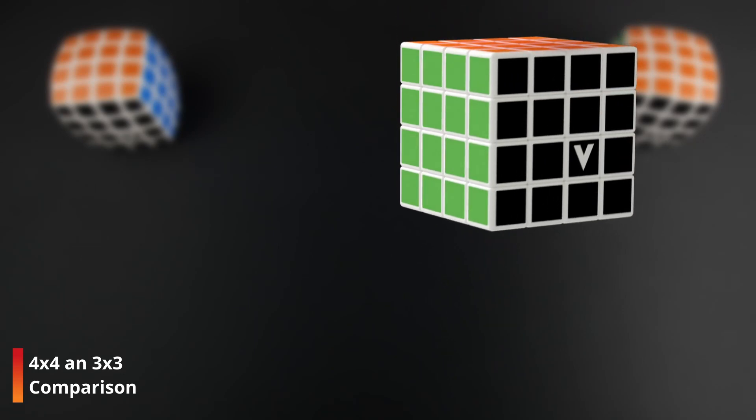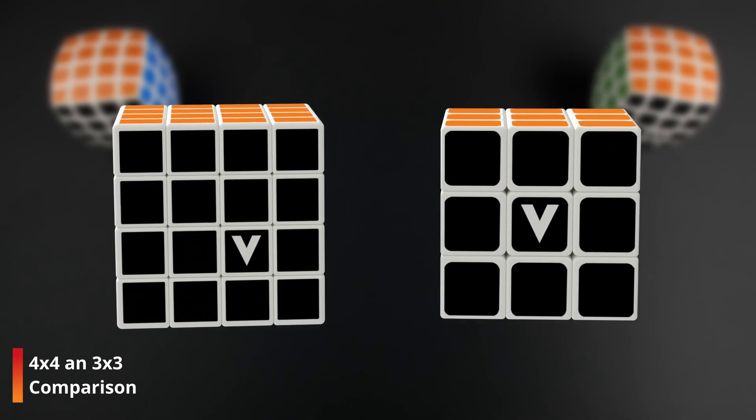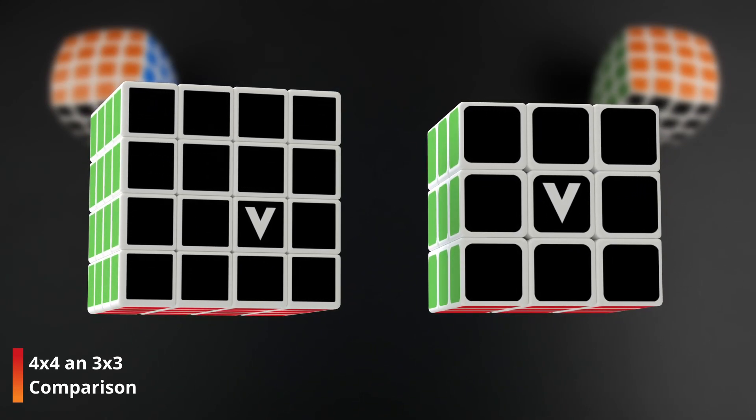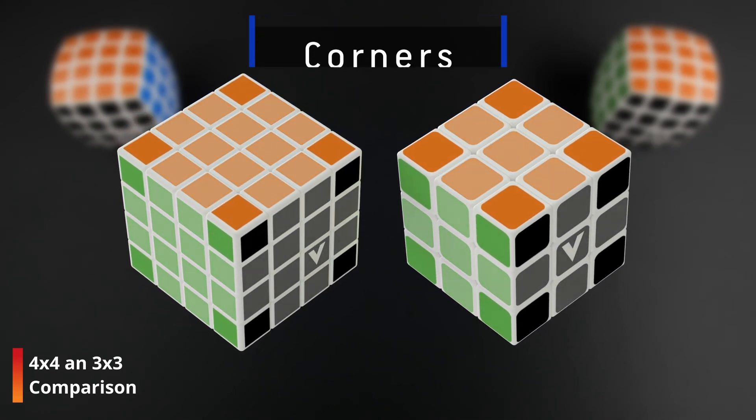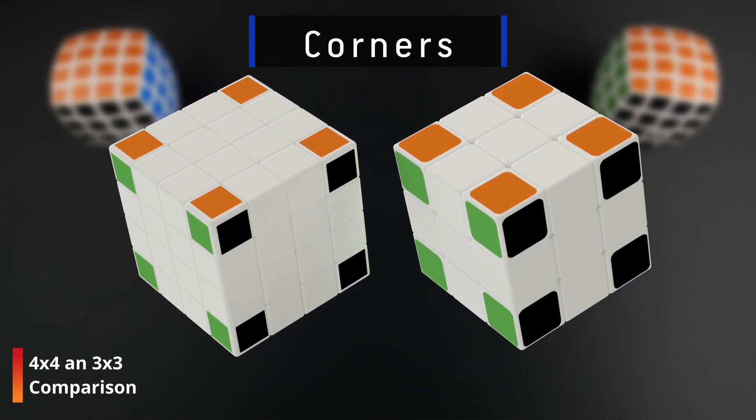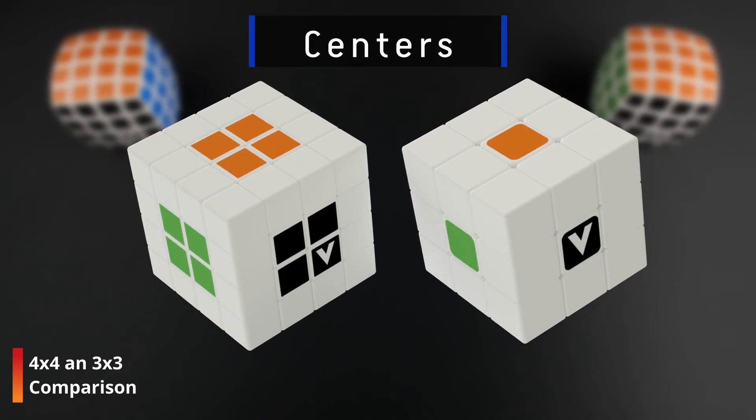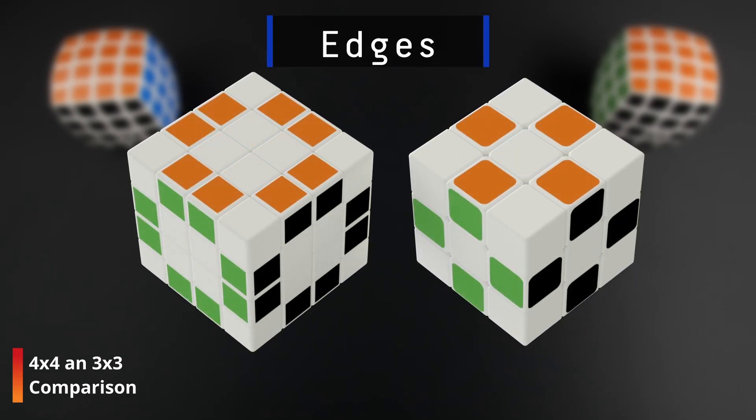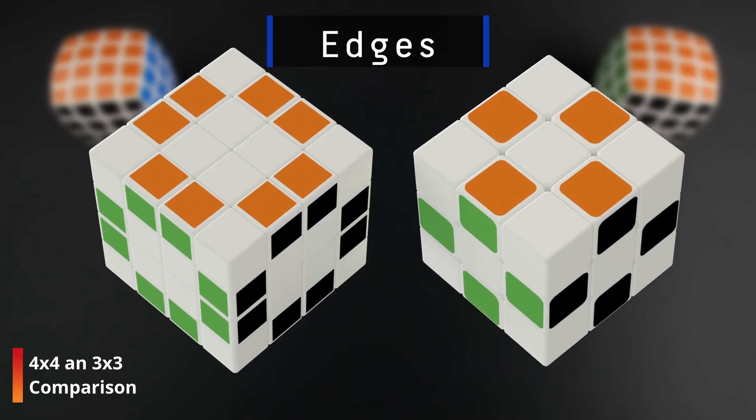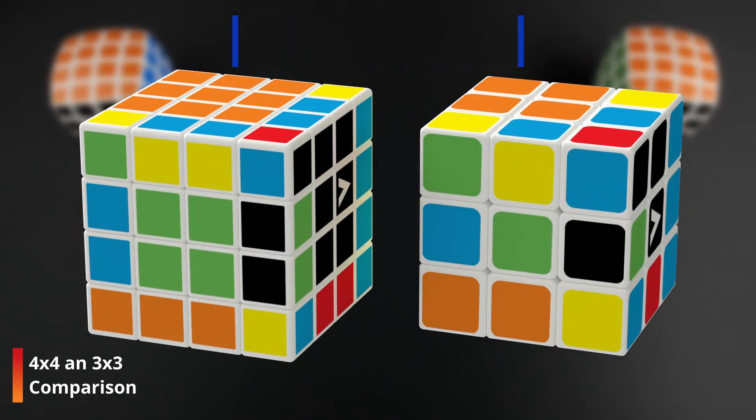Our beginner method will reduce the V-Cube 4 into a V-Cube 3, just like most pro methods, but with more moves. Let's begin by comparing those puzzles to understand what we are dealing with. Corners are identical in both of them. The centers of the 3x3 are divided into four smaller center pieces. Finally, edge pieces are also divided into pairs. Having this in mind, you can see that these cubes can be solved with the same moves.